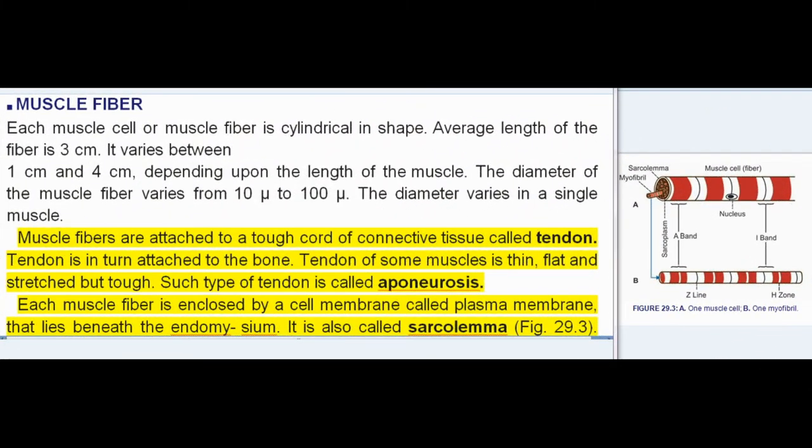Muscle Fiber: Each muscle cell or muscle fiber is cylindrical in shape. Average length of the fiber is 3 cm. It varies between 1 cm and 4 cm, depending upon the length of the muscle. The diameter of the muscle fiber varies from 10 to 100 microns. The diameter varies in a single muscle.